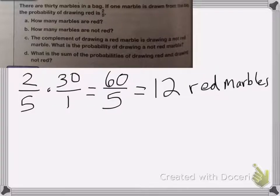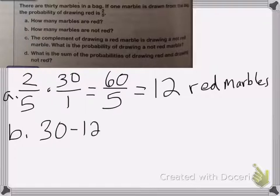On B, so it says how many marbles are not red, so if 12 of them are red, then I know that the rest aren't red. So I'm going to do 30 marbles minus the 12 marbles, which is equal to 18 marbles.